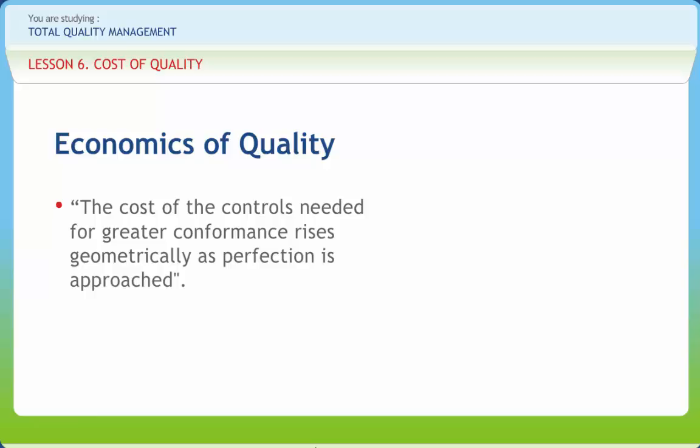Greiner's model suggests that perfection can almost be reached in an economic manner in that the costs of appraisal plus prevention are finite, not infinite.